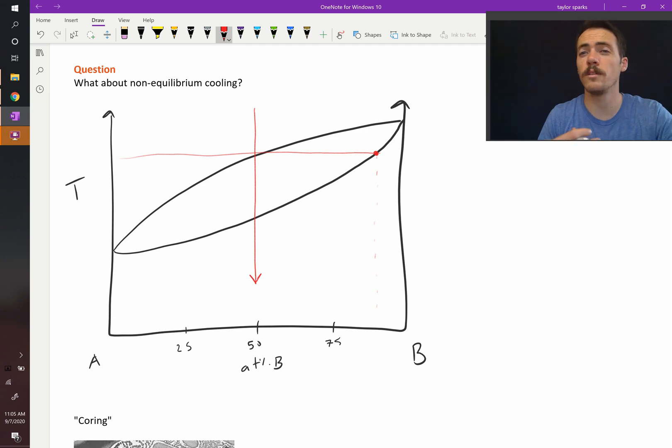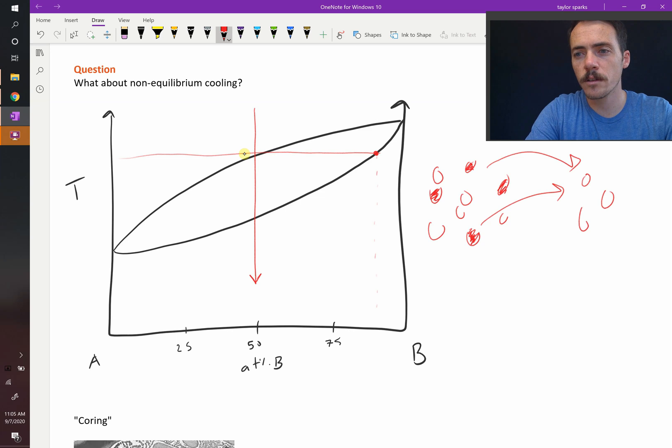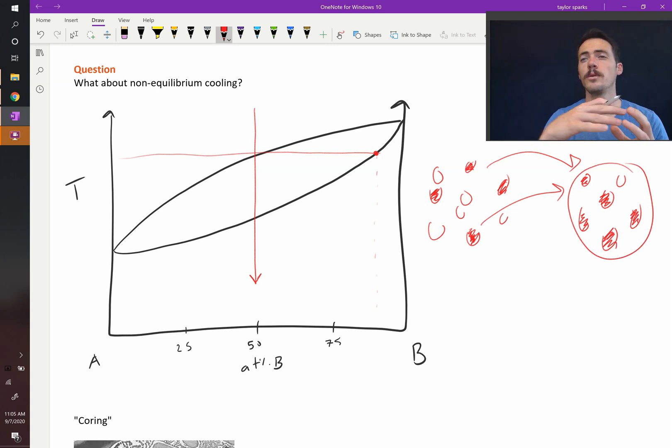So that requires diffusion. If we had a mixture of A and B atoms, where some of these are Bs and the others are A, like so, all these Bs had to diffuse over to get to a new solid which is mostly B. That's our new solid that's forming. It requires the diffusion of atoms.